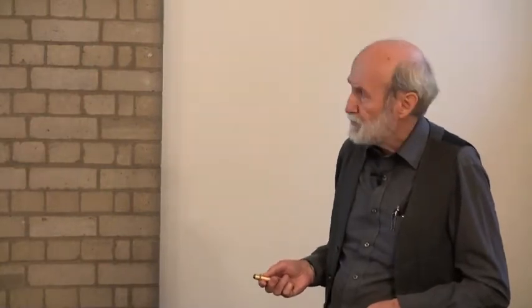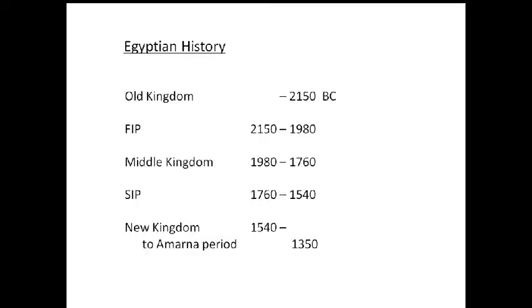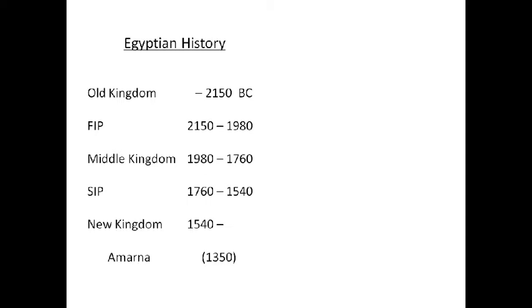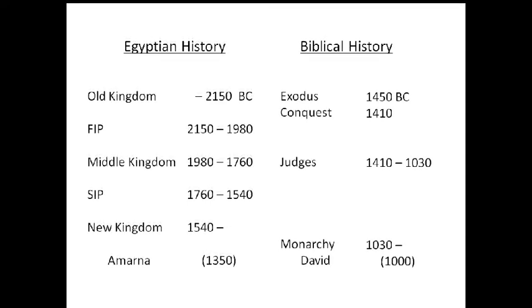Coming back to Egyptian history, the Old Kingdom ends about 2150 BC according to the Ancient Egyptian Chronology book, though 2200 is more common. Then you've got the First Intermediate, the Middle Kingdom, Second Intermediate Period, and the first part of the New Kingdom. Those are all periods in the region of 200 years.